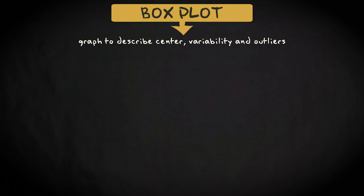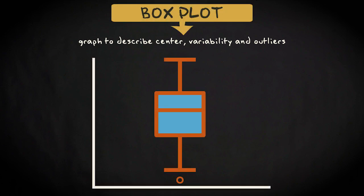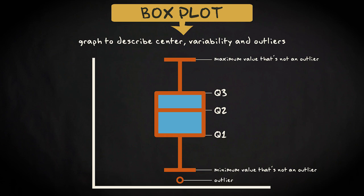There is one specific type of graph that is very useful when it comes to describing center and variability, and detecting outliers. That graph is the so-called box plot. The box plot shows you at a glance Q1, Q2, and Q3, the minimum value that's not an outlier, the maximum value that's not an outlier, and the outliers.